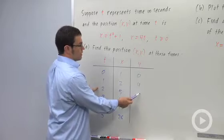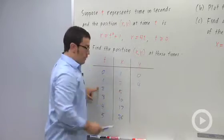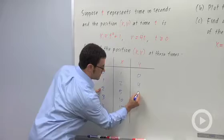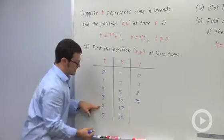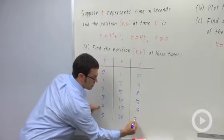And for the y values, I multiply the time by 4. 2 times 4, 8. 3 times 4, 12, then 16, and 20.